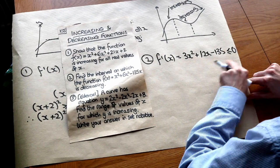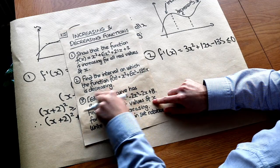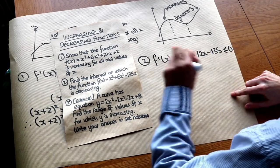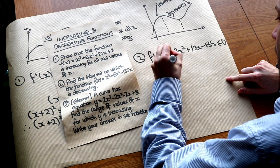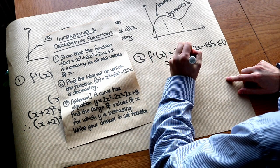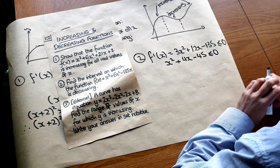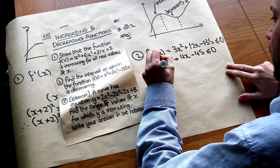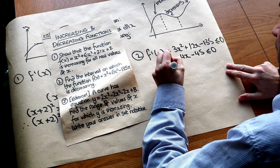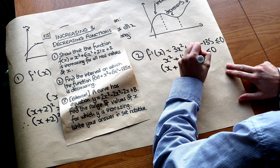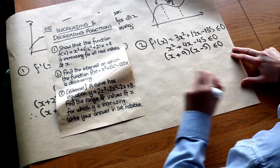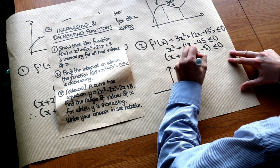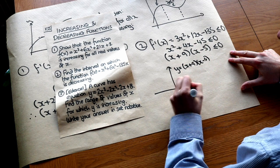This is not always true for every value of x, since there's only a range of values for which this function is decreasing. Again, all terms divide by 3, so dividing both sides gives x² + 4x − 45 ≤ 0. We then have a quadratic inequality, which we can factorise as (x + 9)(x − 5) ≤ 0.